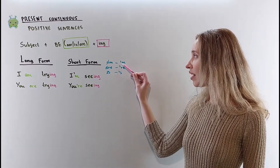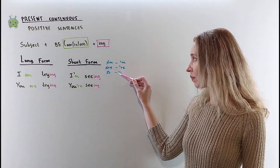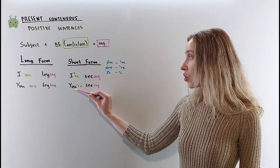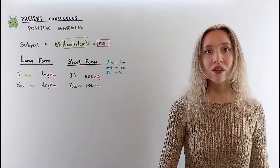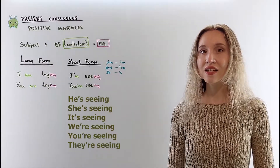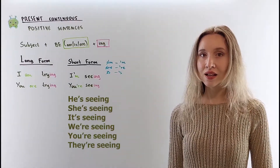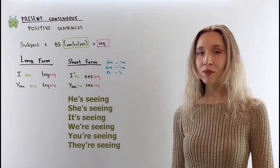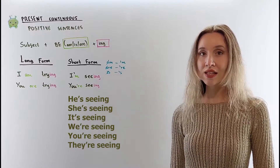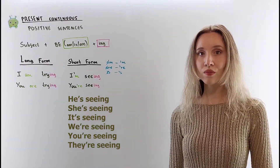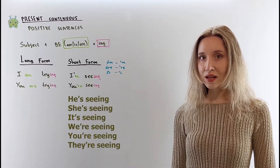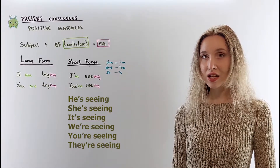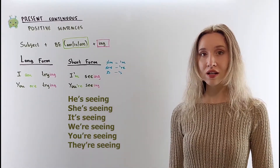To create the short form, remove the A from am, the A from are, and the I from is, and use an apostrophe in that place. So the short forms are: I'm seeing, you're seeing, he's seeing, she's seeing, we're seeing, you're seeing, they're seeing.